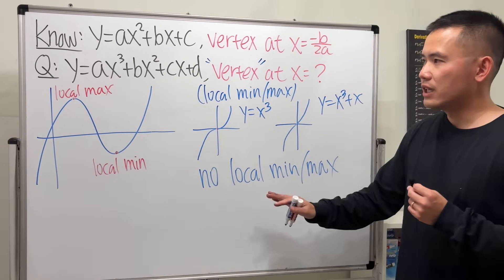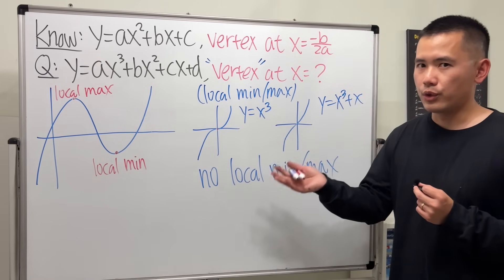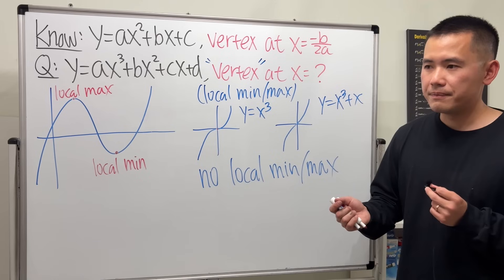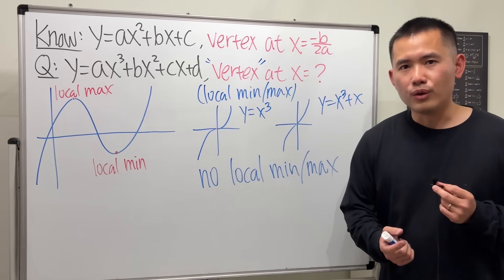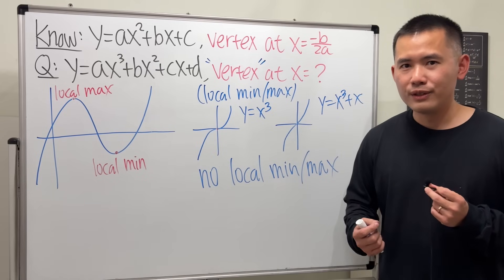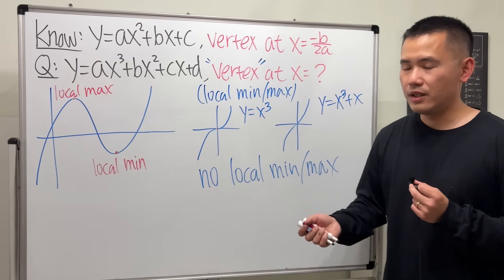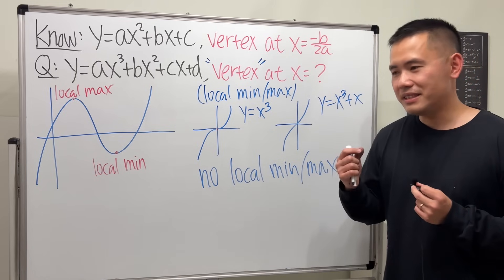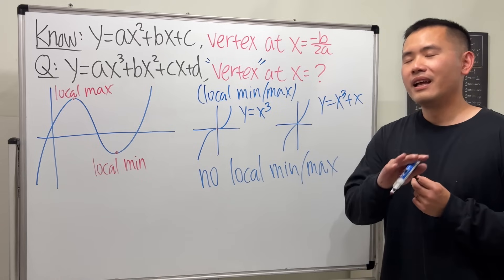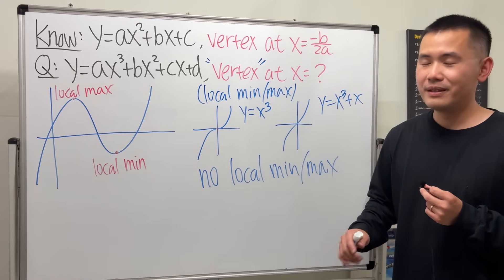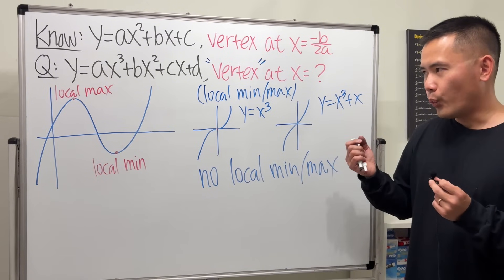So later on, once we get the formula, we'll talk about what the conditions are to really have a local min and local max for a cubic, and how to identify them. Now, we have to be honest with each other — we can just take the derivative, set it equal to 0, solve for x, and be done. But since everybody knows that, let's not do it — no calculus in this video, to make this more interesting. So how can we do it with just algebra?